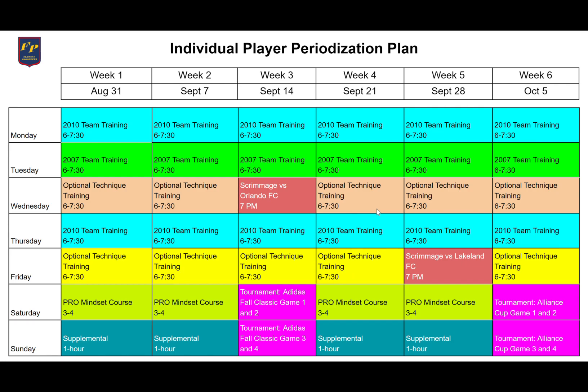For the individual player periodization plan, each week you put down what you're trying to improve. If you have team practice, put it in. If you have a supplemental session like a private or working on your own, put it in. If you're doing a course or watching game film, put that in too. You might have multiple things in one day — list them all so you can monitor your workload.